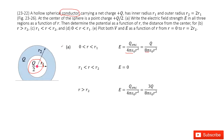The second region is R larger than R1 and smaller than R2. Since this is a conductor, the charge is distributed at the surface, so inside the conductor the electric field is zero.